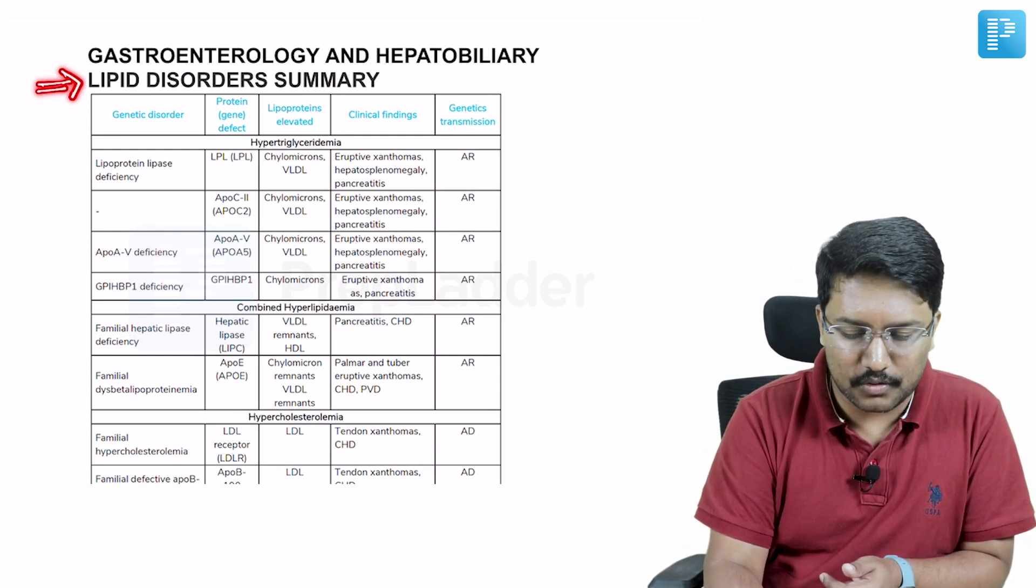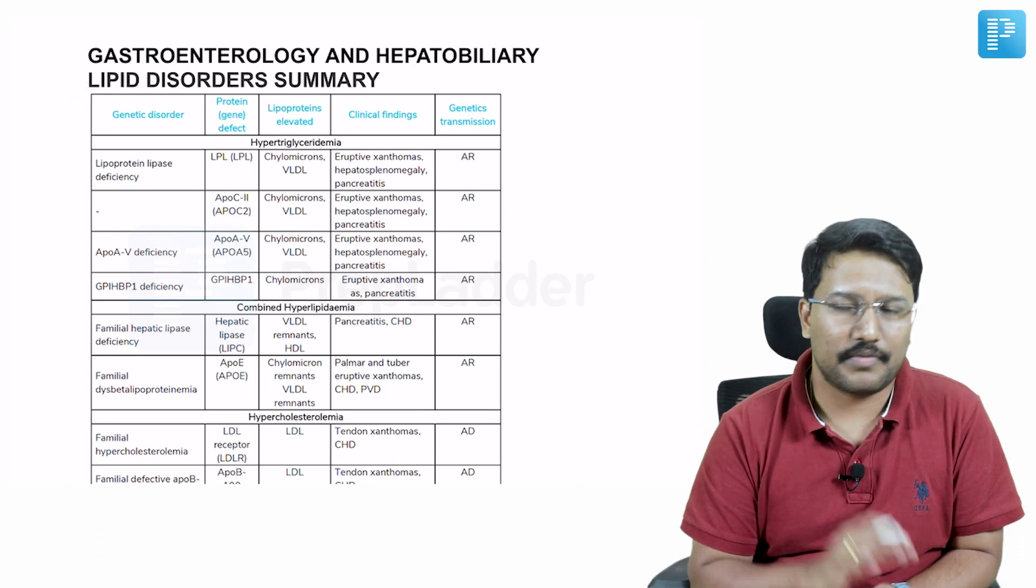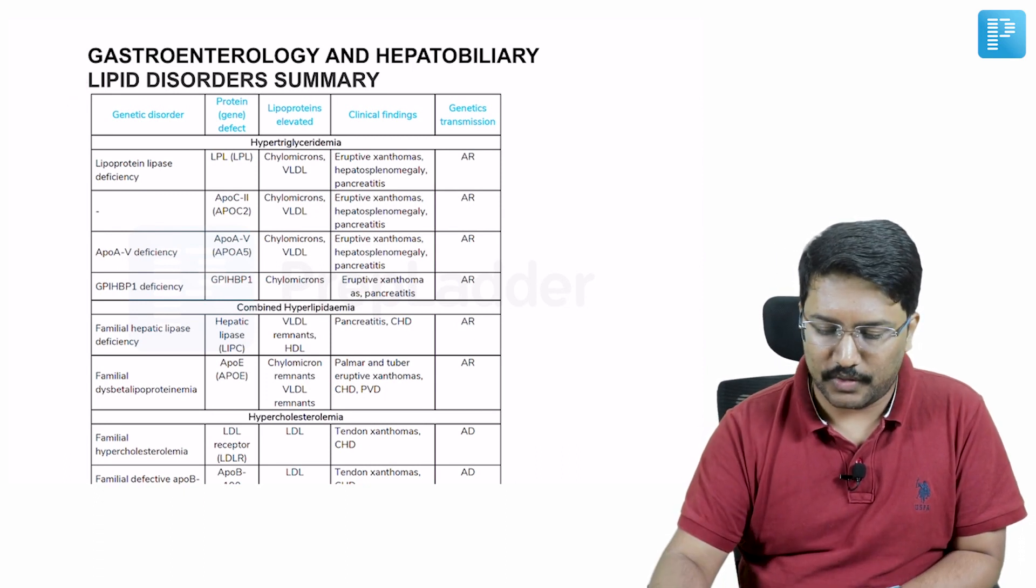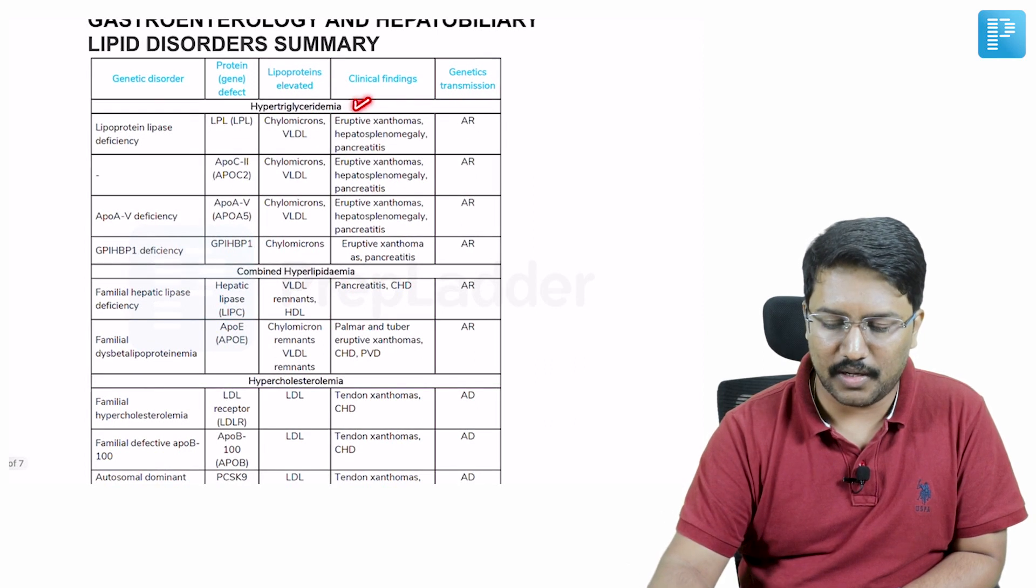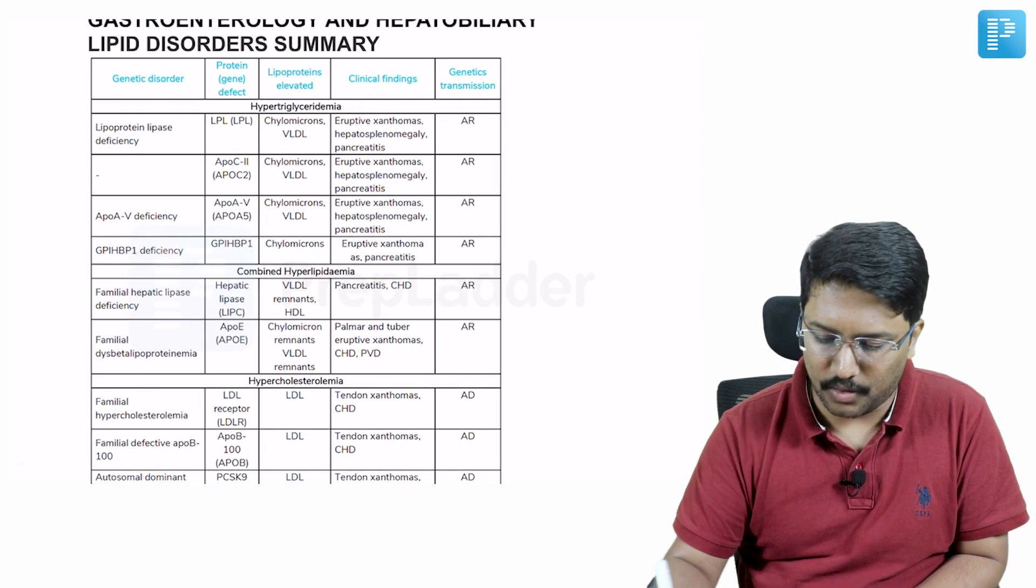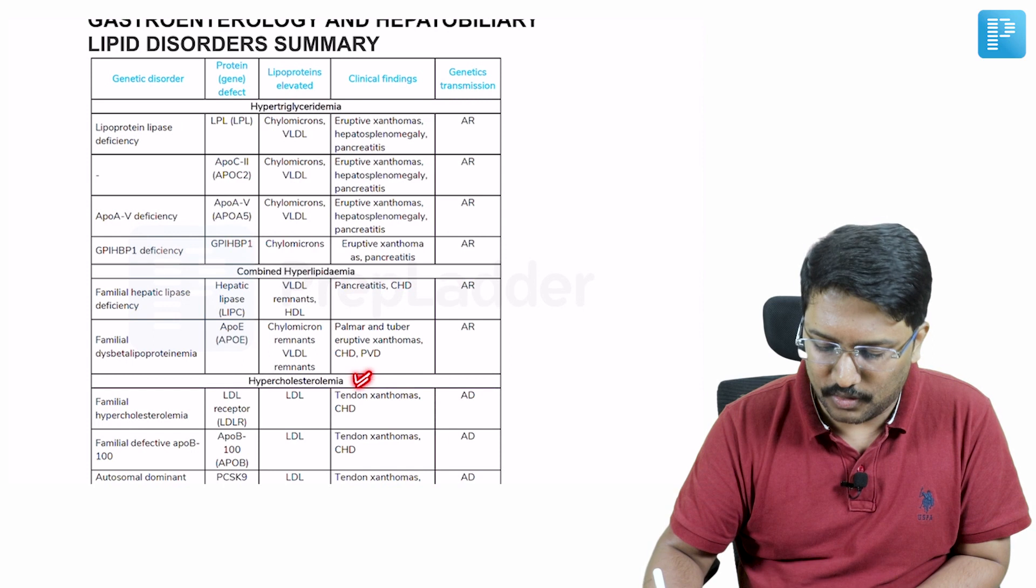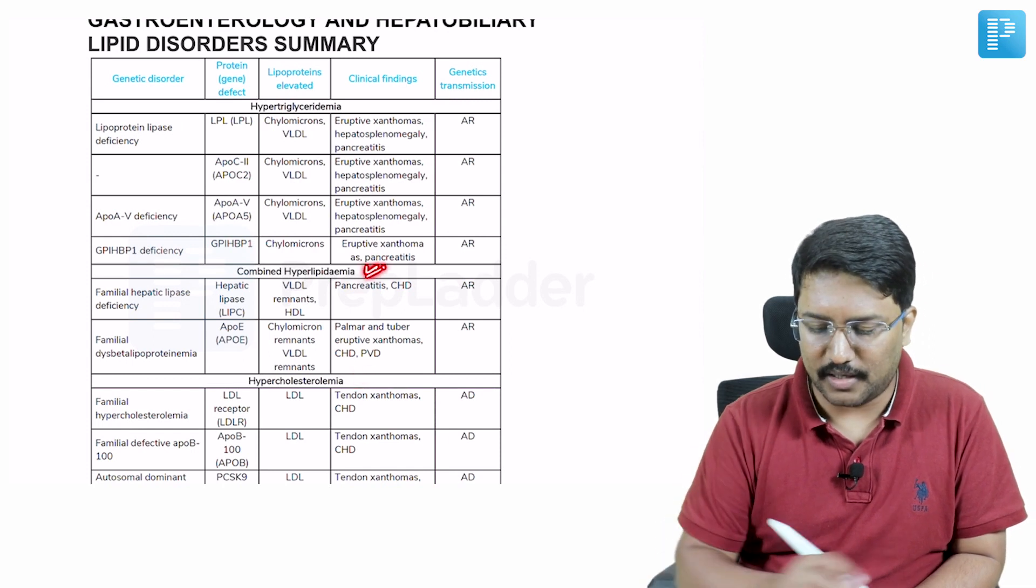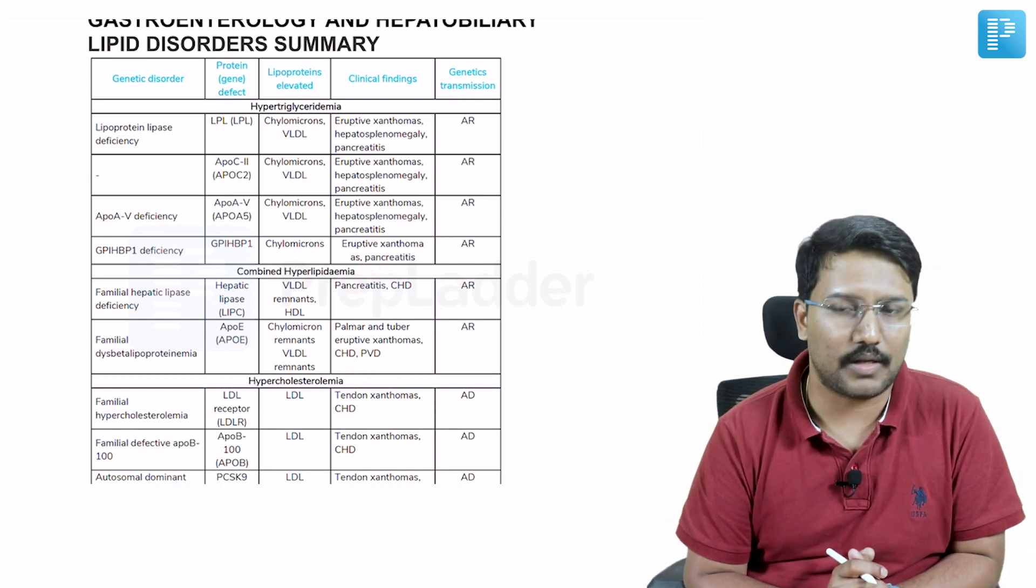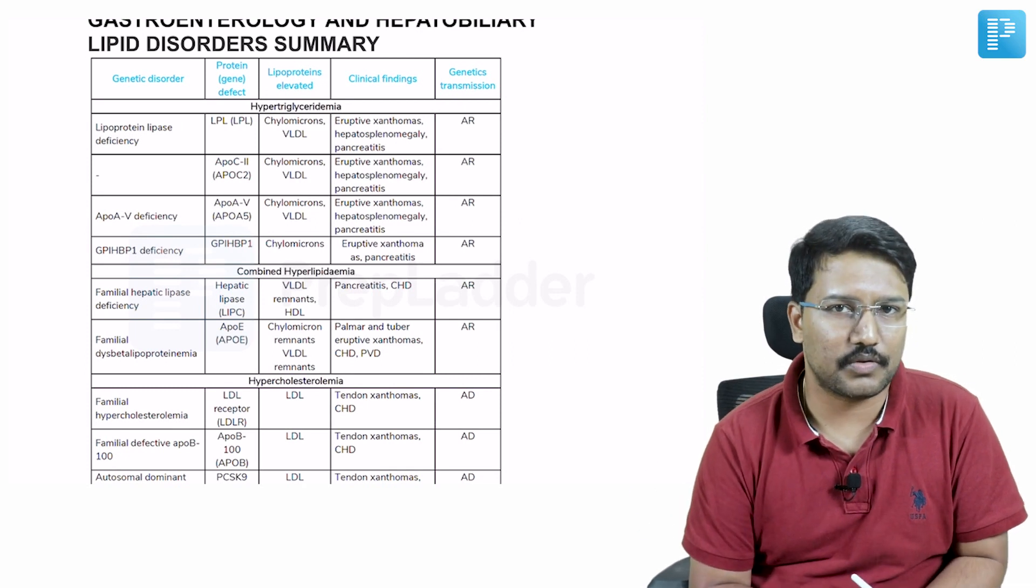So let me take the example for today, that is lipid disorders, a very simplistic approach. When you say lipid disorders, there are three possibilities: it could be hypertriglyceridemia, hypercholesterolemia, or combined hyperlipidemia. Basically here we are talking about inherited forms. These three broad categorizations are possible.